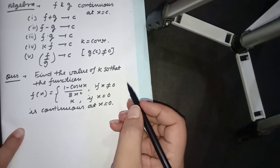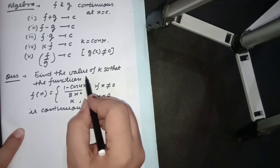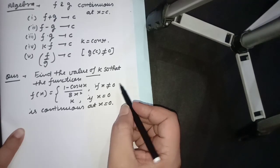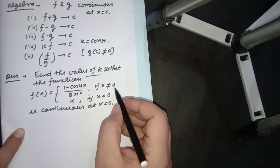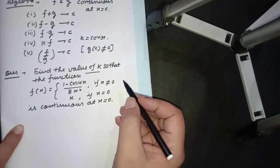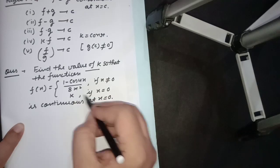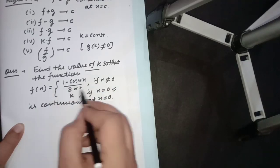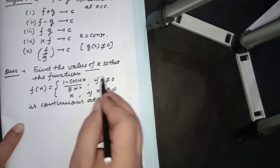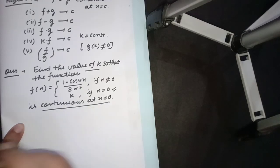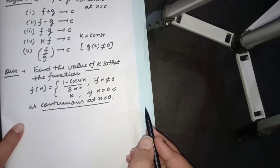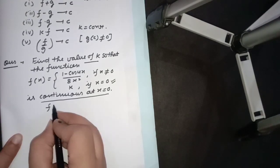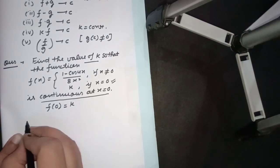Here, if we need to find the value of a constant, it is not always necessary to calculate both left hand and right hand limits. In this case, the functional value f(0) is k. Since the function is already stated to be continuous, we can calculate just one limit and equate it to k. So f(0) = k. Now let's calculate the left hand limit: limit x tends to (0 minus h), and since 0 minus h means x is not equal to 0, we select the first piece of the function: (1 minus cos 4x) upon 8x squared.